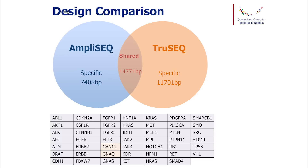We had a look at the designs available for a standard cancer panel and the overlap between them. About two-thirds of the sequence content is shared between the two panels we looked at. Most genes are in both panels, except I would point out that two genes are only covered by TruSeq, which was rather important to us.